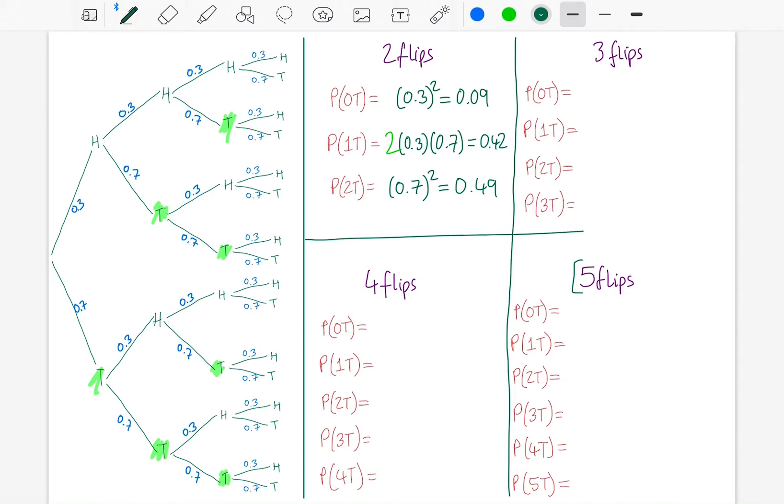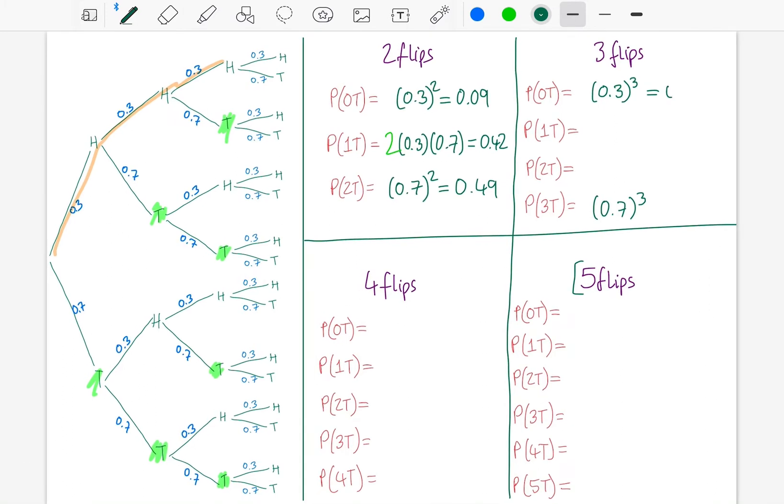Now, what about three flips? Well, I'm going to look at the next section of the probability tree. Zero tails, that's going to be 0.3 cubed. That's just going to be this times this times this over here. Now, three tails, very similar. 0.7 cubed, down, down, and down on the probability tree. So 0.3 cubed is 0.027. 0.7 cubed, 0.343.